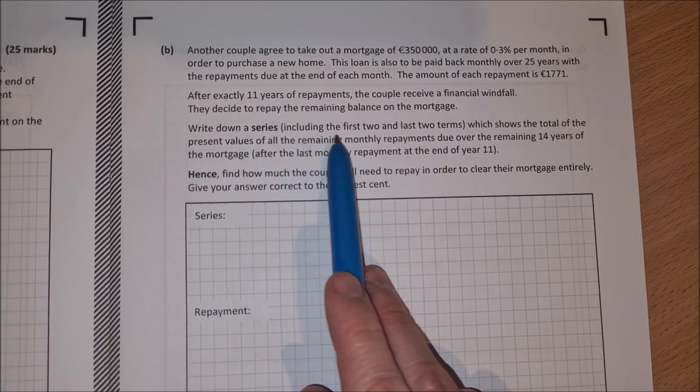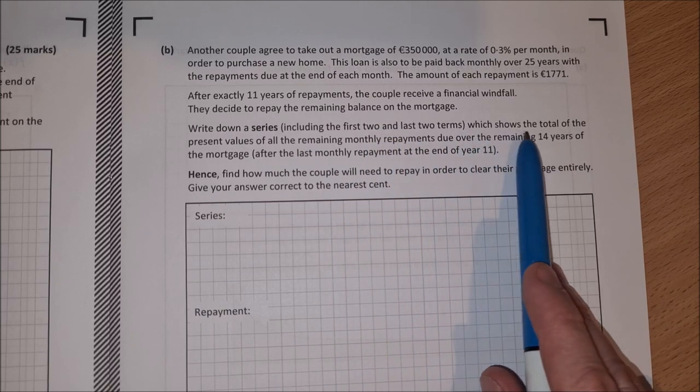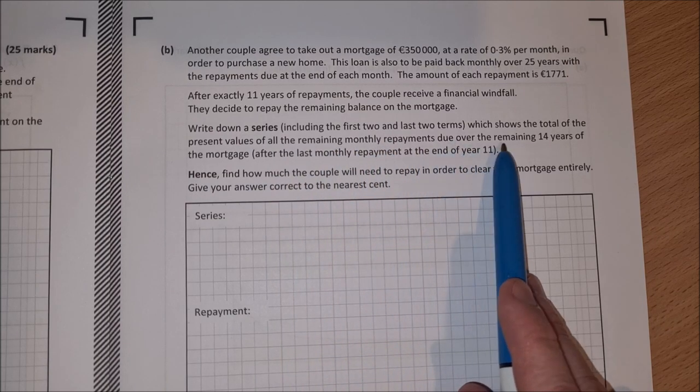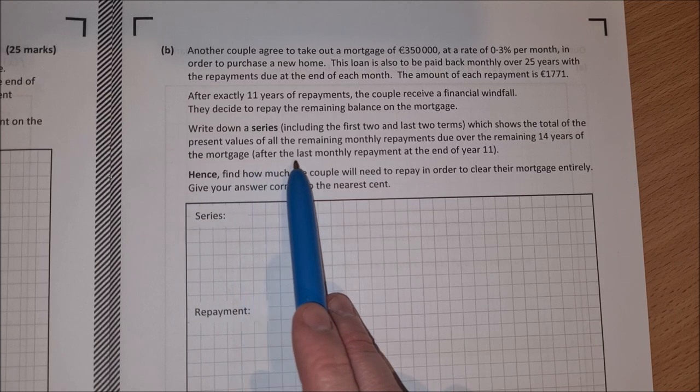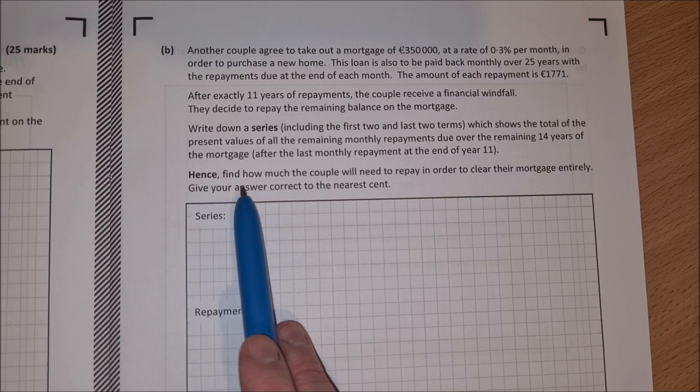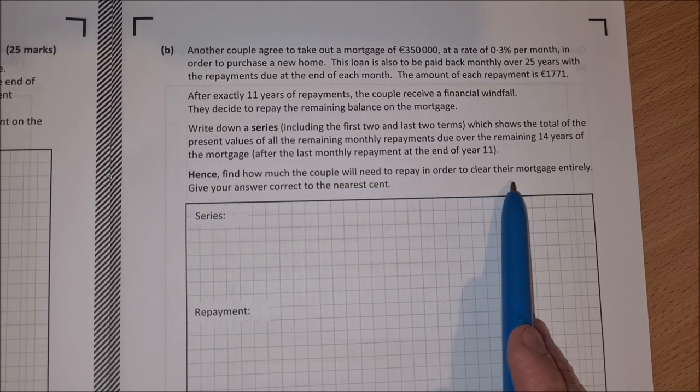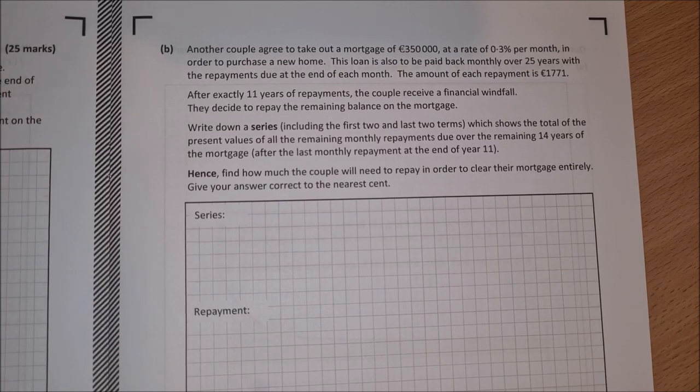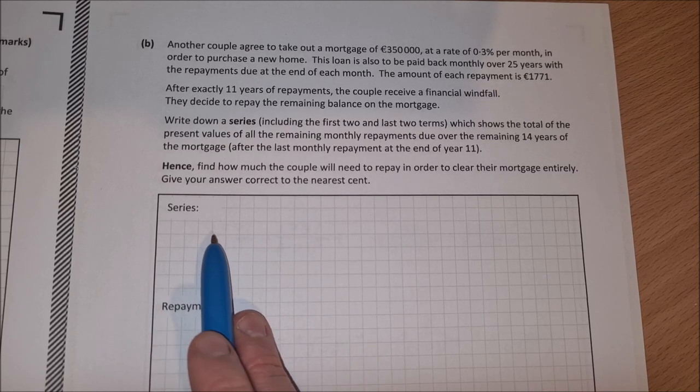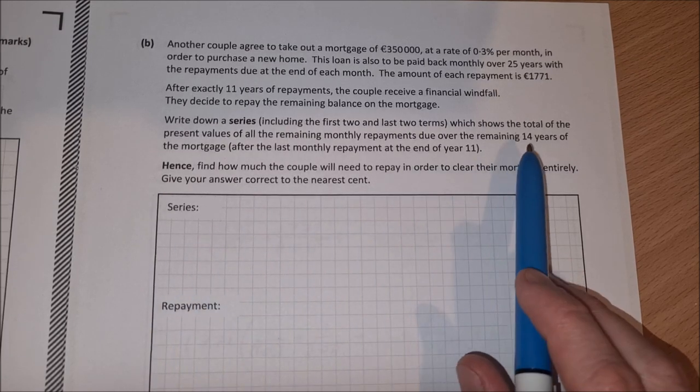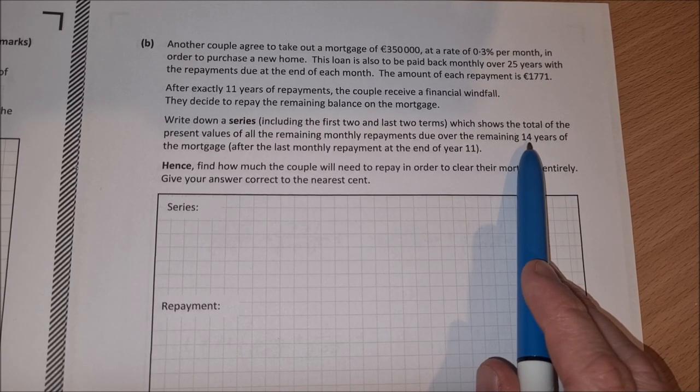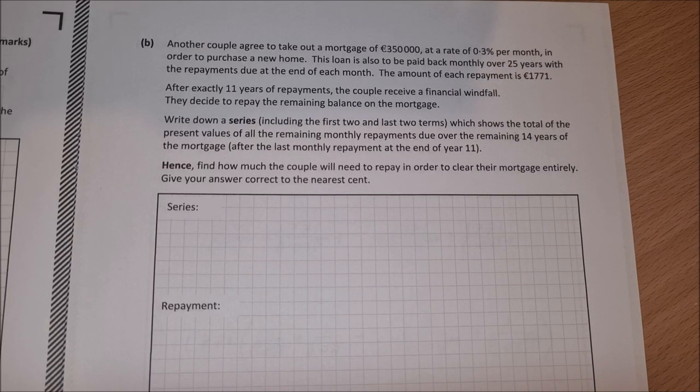Write down a series, including the first two and last two terms, which shows the total of the present values of all the remaining monthly repayments due over the remaining 14 years of the mortgage after the last monthly repayment at the end of year 11. Our series is the present values of each of the remaining repayments. Now there's 14 years of repayments, that's 12 repayments a year, so 14 by 12 is 168 repayments. We have to find the present value of each of these.